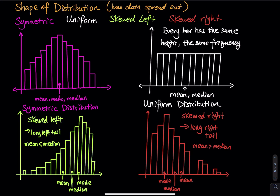Imagine a hundred people took a test and a large group got a very low score — that is the tall mountain on the left. A small group got a very high score, represented by shorter bars on the right because the group is small and frequency is low. Even though the group is small, their high scores pull the mean up, which is why in a skew right distribution the mean is greater than the median.